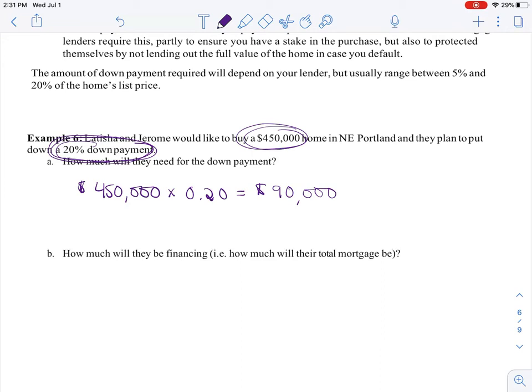And what I'm asking there is how much do they actually have to ask the lender to lend them? Well, they don't need the $90,000 to be lent to them because they already have it. So their home price is $450,000, but they already have the $90,000, and so that's why they're only going to finance $360,000.